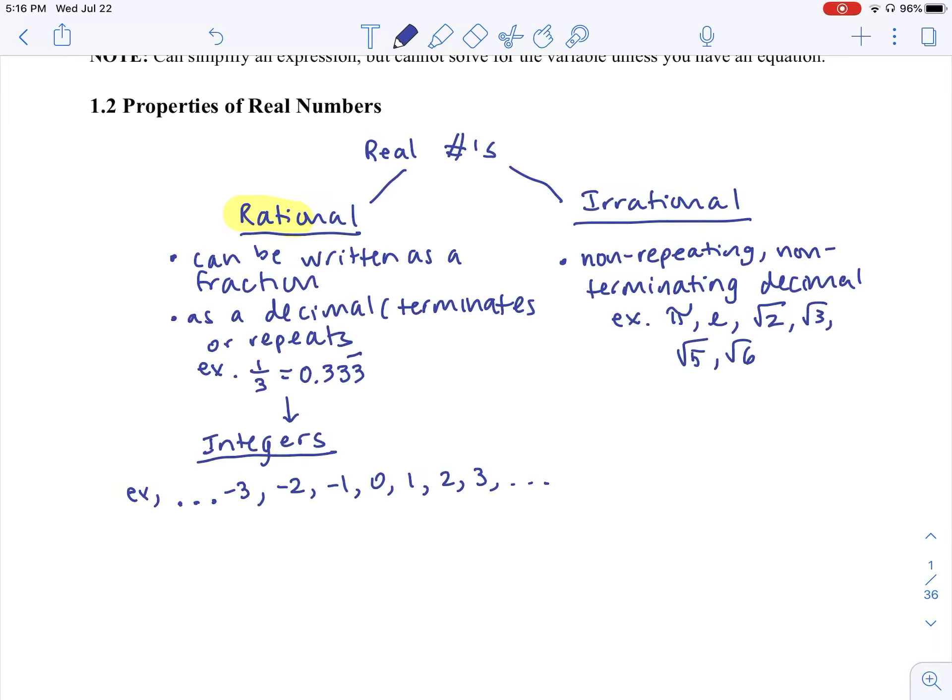And these values that you see here, extending into negative infinity and infinity, and all the values in between those that fall into this category are integers. And then within the integer category, we have whole numbers.